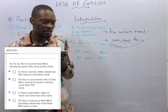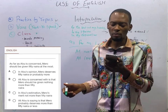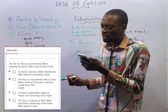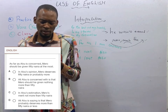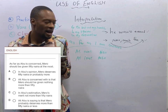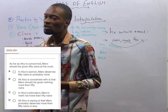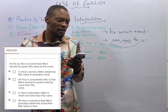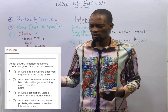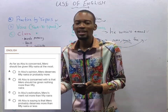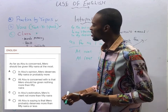Option A: in my opinion, Mero deserves 50 Naira or probably more — No. Option B: all Abu is concerned with is that Mero should be given nothing more than 50 Naira. Option C: in Abu's estimation, Mero merits not more than 50 Naira. Option D: all Abu is saying is that Mero probably deserves more — wrong. 'As far as Abu is concerned' means in Abu's estimation. 'At the most' means not more than. That makes option C the correct answer.